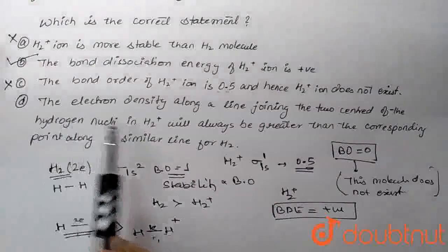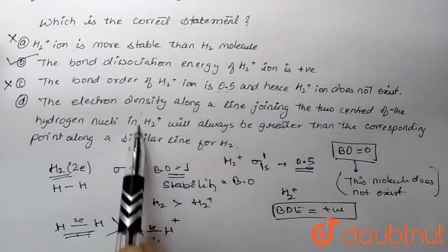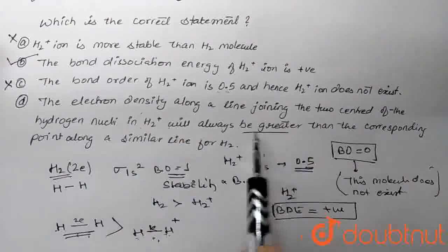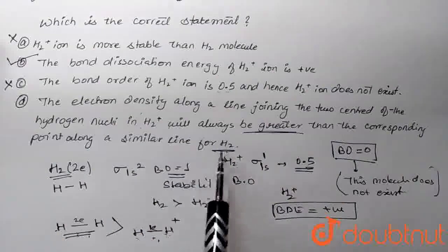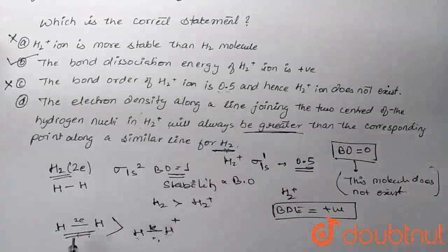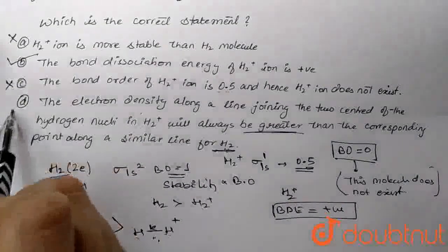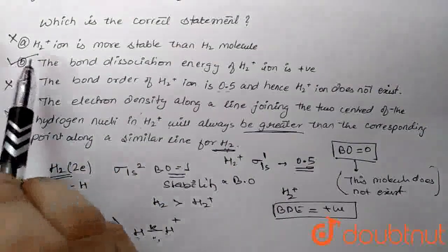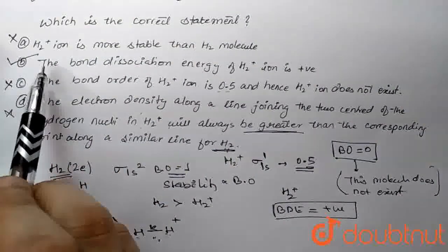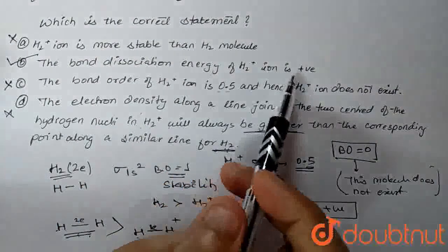So according to this statement, this statement is saying that the electron density in H2 plus will be more than H2, but it is not. It will be more in H2 than H2 plus. So this statement is wrong. So what is our correct statement? Only one is correct. The bond dissociation energy of H2 plus is positive. Okay?